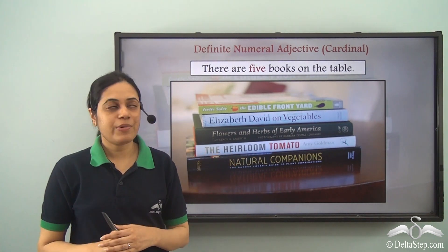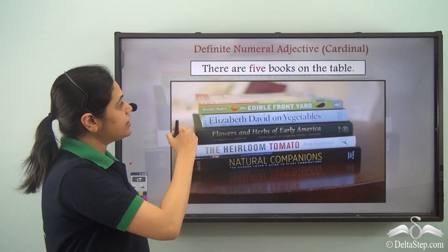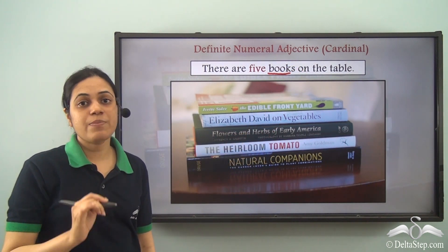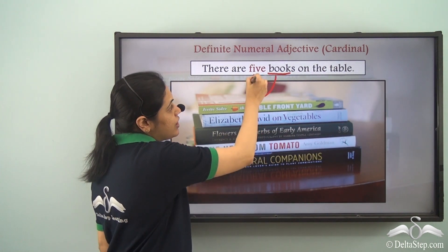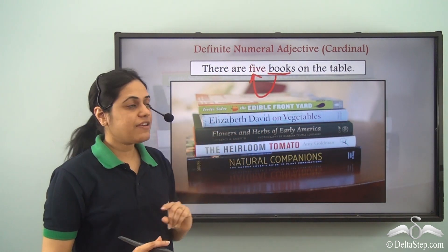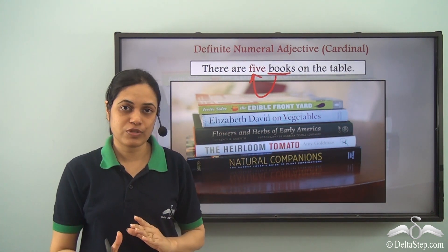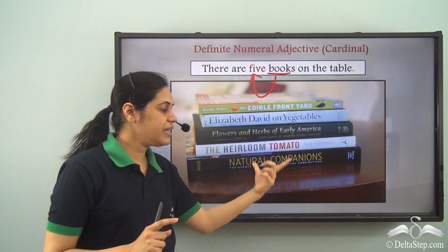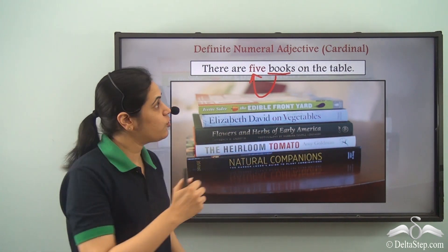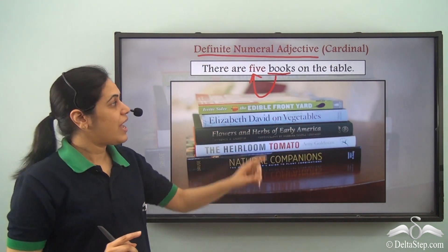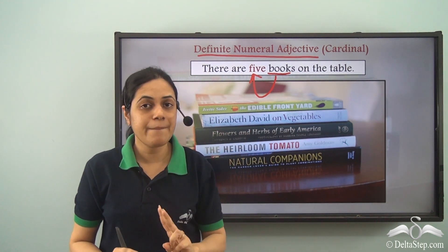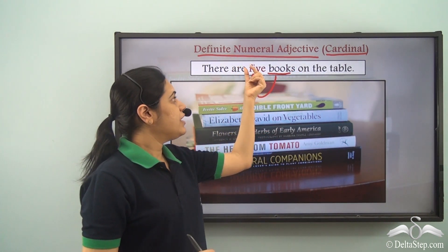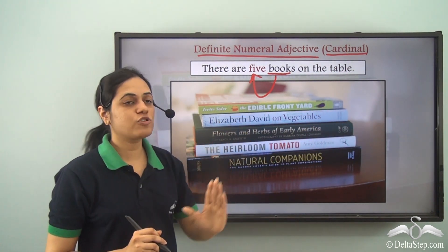Here is an example of a definite numeral adjective, cardinal type: 'There are 5 books on the table.' Books is a noun, and the word 5 tells us about the exact number of books. Exact makes it a definite numeral adjective, and number makes it cardinal. So, 5 is a cardinal definite numeral adjective.